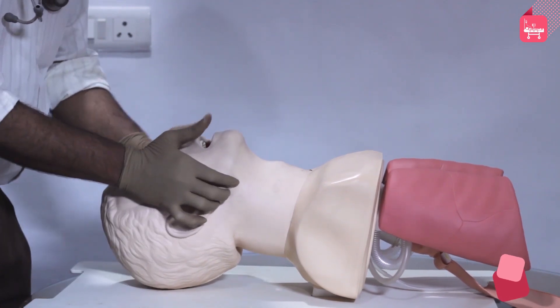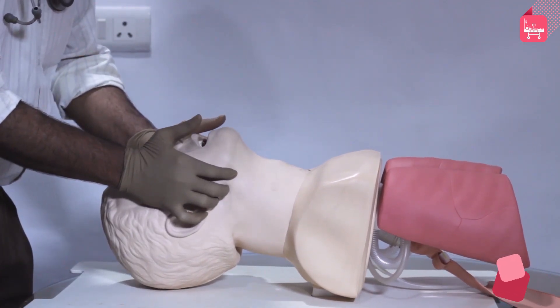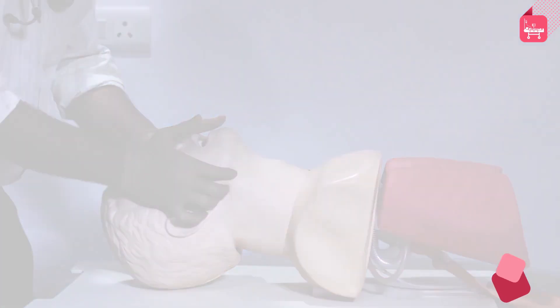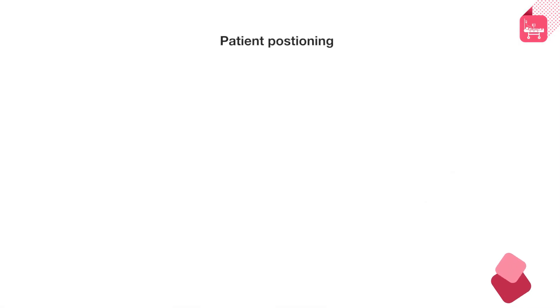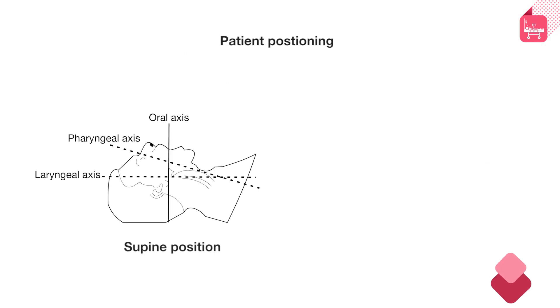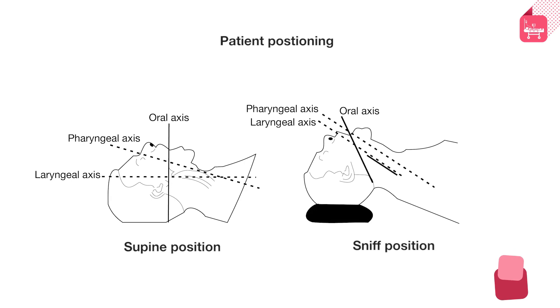With neck flexion and extended head, placing a small pillow or pad of about four centimeters under the occiput has been shown to help in obtaining a better laryngoscopic view. In the neutral position, the oral, pharyngeal, and laryngeal axis are not aligned to permit adequate visualization of the glottic opening. The sniff position helps to align the oral, pharyngeal, and laryngeal axis and facilitates better visualization of the glottic opening.